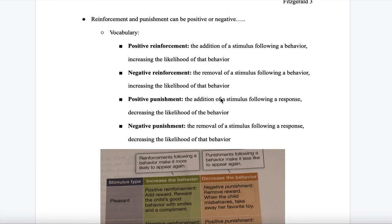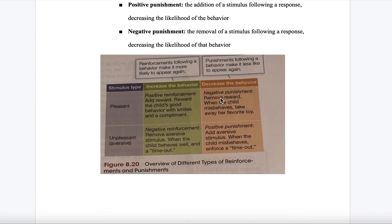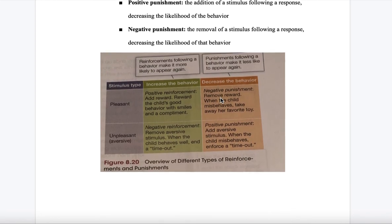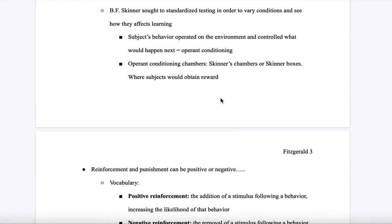Negative punishment is the removal of a stimulus following a response, which decreases the likelihood of that behavior. Here I included the table from page 323, figure 8.20, which covers stimulus type and the increase or decrease of behavior, whether pleasant or unpleasant and aversive. And that's all I have for chapter 8.